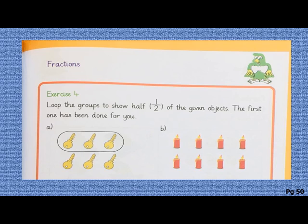Students, now take out your mathematics book and open page number 50. Have you opened? Now write today's day, date and today's task. Now we are going to do exercise four, and in exercise four you have to loop the groups to show half, and the meaning of half is other.